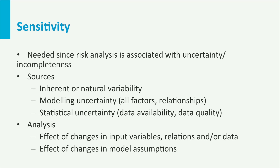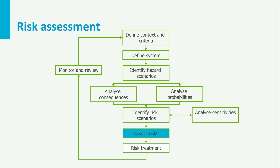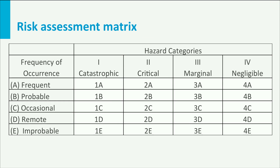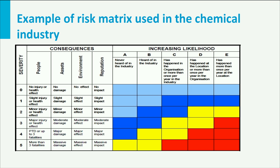We continue in our model with the sixth step: the risk assessment. We can make life more simple if we work with classes and categories, though this is not a requirement and all parties involved should agree on this method. We combine frequencies and outcomes in a matrix. In this particular matrix we distinguish five frequency categories and four outcome classes. We can then label each cell with a particular outcome and an associated frequency. In the next slide I show a particular matrix that is used in the chemical industry, with different probabilities associated with different consequences for different targets.